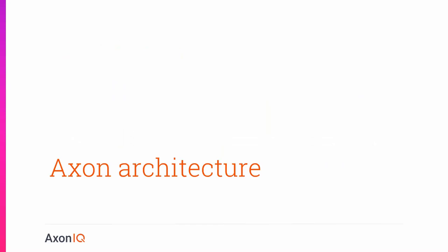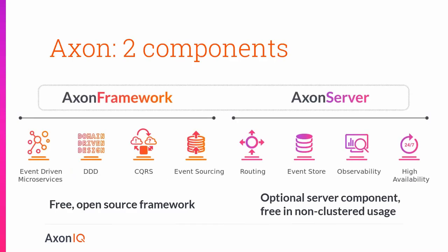To go one level deeper: how does Axon do this? Looking at the Axon architecture, Axon consists of two components: Axon Framework and Axon Server. Axon Framework is free and open source. Axon Server is an optional component — you can use Axon without it — but it makes it a lot easier to scale out Axon applications. It's free in a non-clustered form, and there's a paid enterprise version for critical deployments.